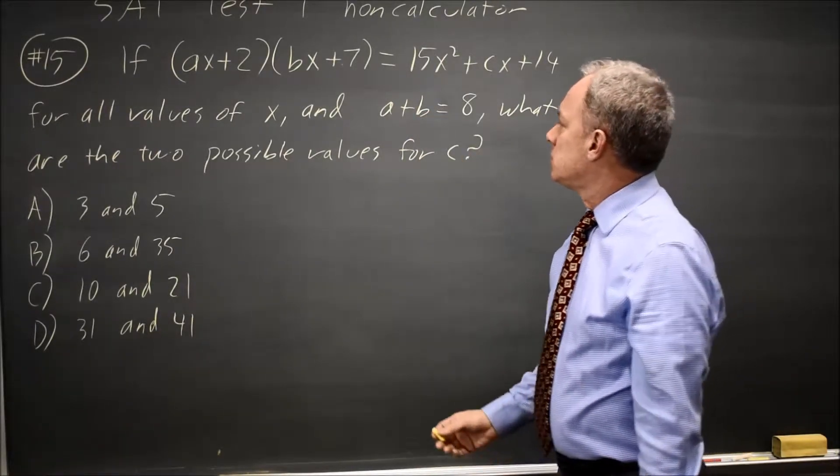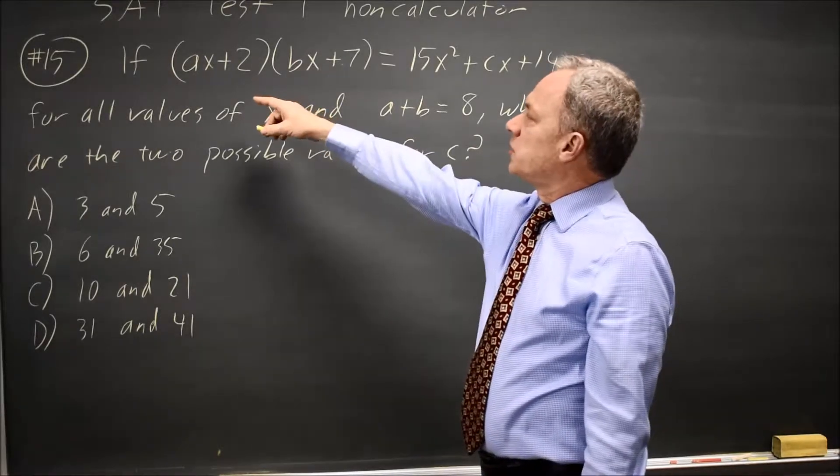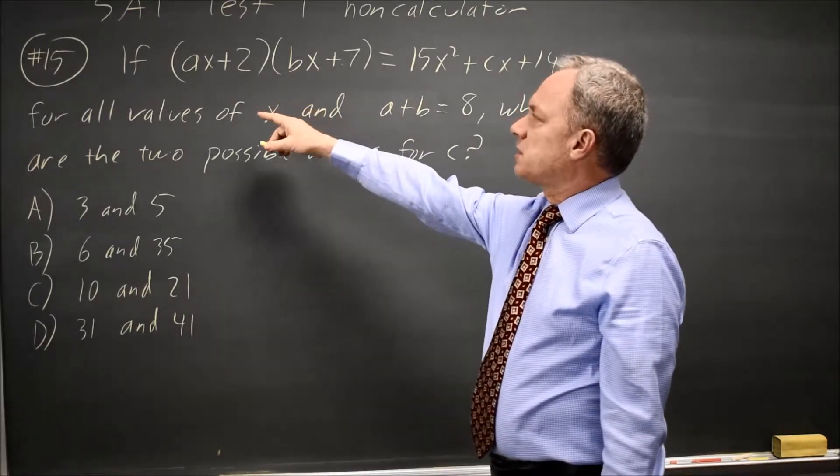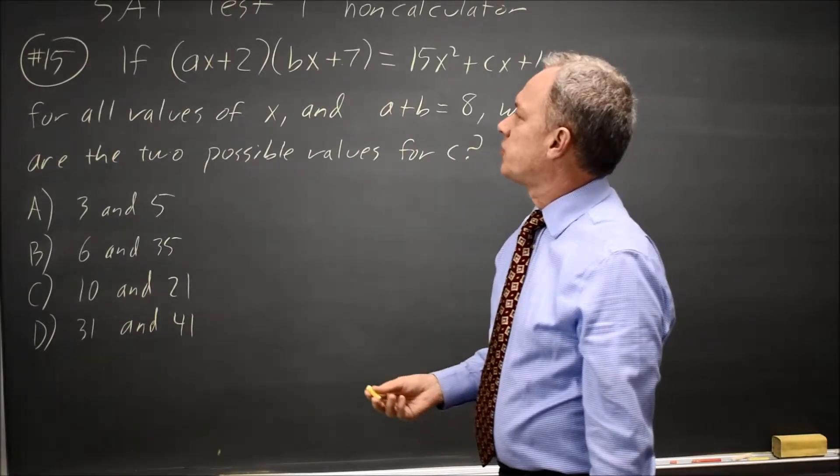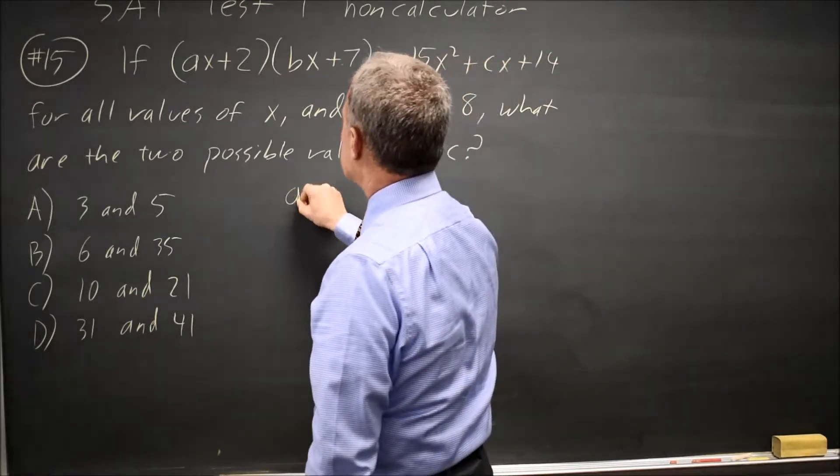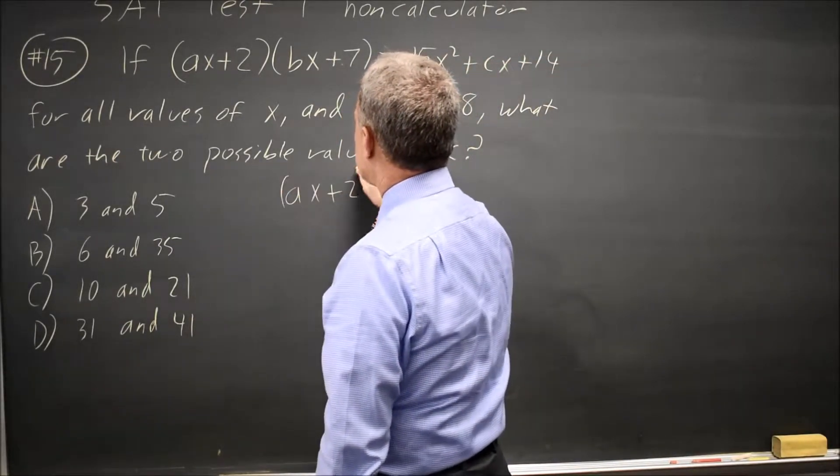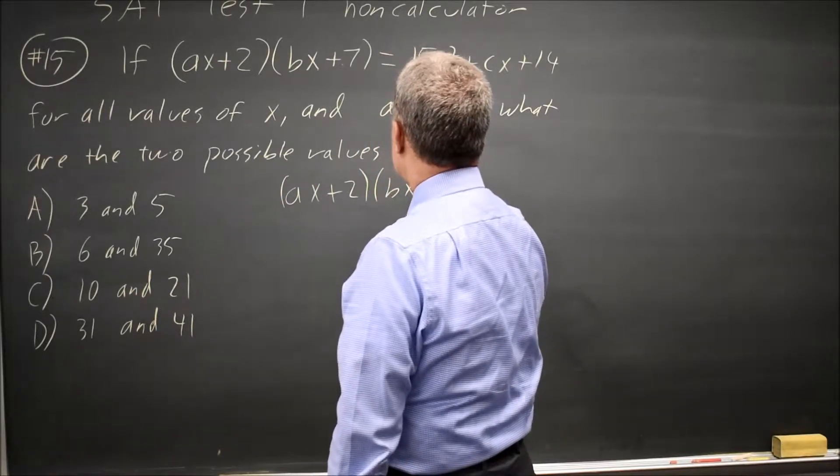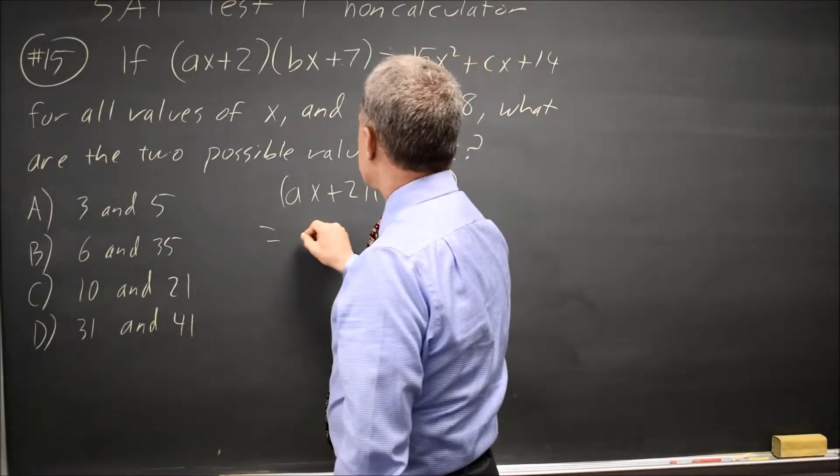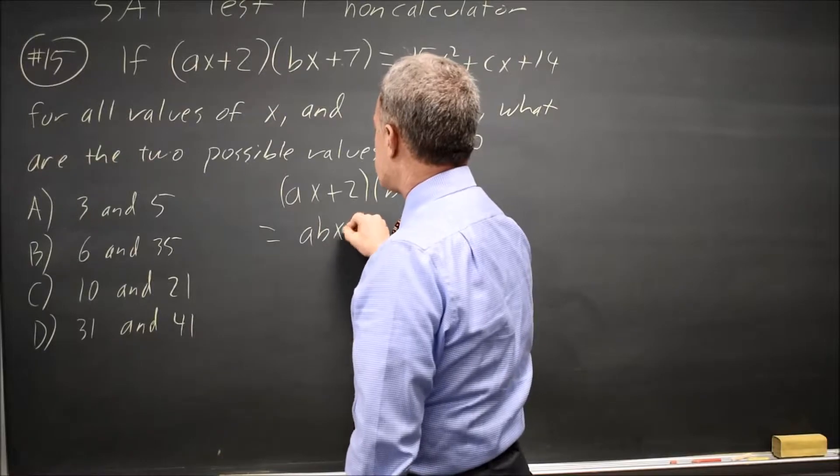Well, let's make up two numbers A and B where A plus B equals 8 and AX times BX equals 15X squared because when I FOIL this, AX plus 2 times BX plus 7, I get ABX squared, that's first times first, plus 7AX, that's the outside,